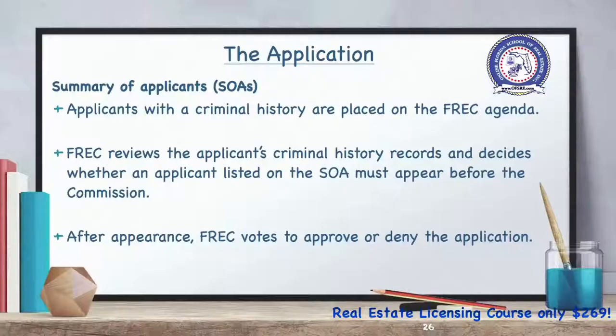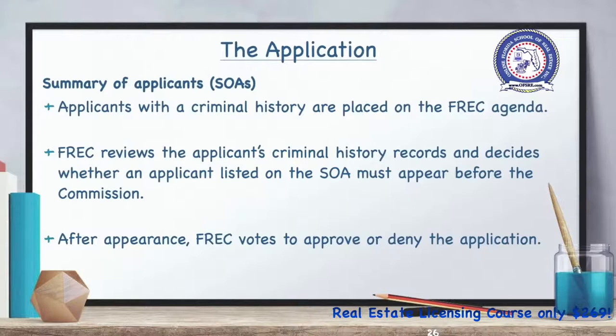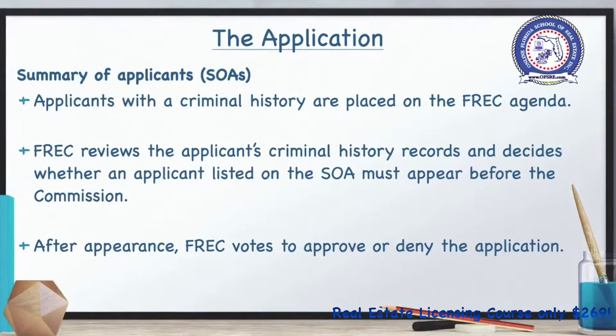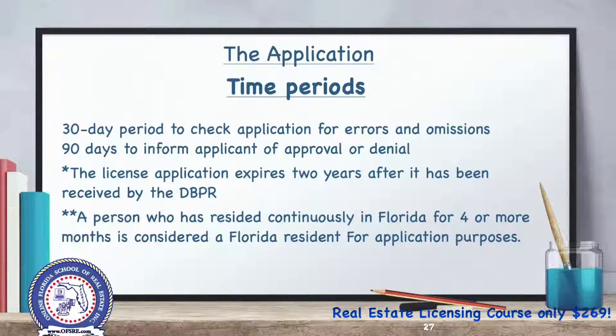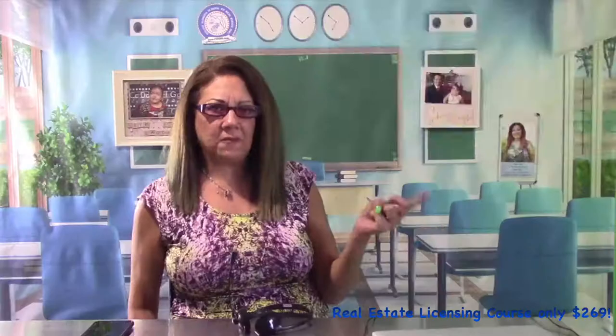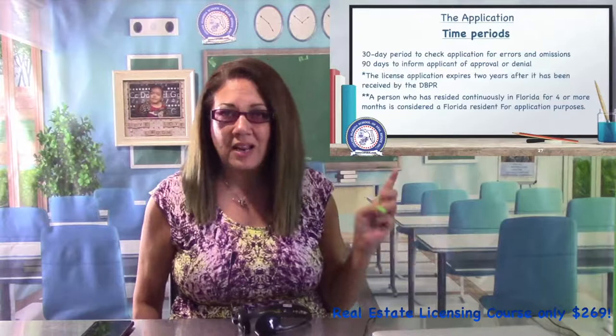The commission, in its monthly meetings, reviews the summary of applicants that have criminal history records and will vote to approve or deny those applications. Once the application for licensure has been received, the DBPR has 30 days to return the initial application for errors or omissions. Upon receipt of an acceptable application, the DBPR has 90 days to approve or deny the application. The license application expires two years after it has been received by the DBPR.